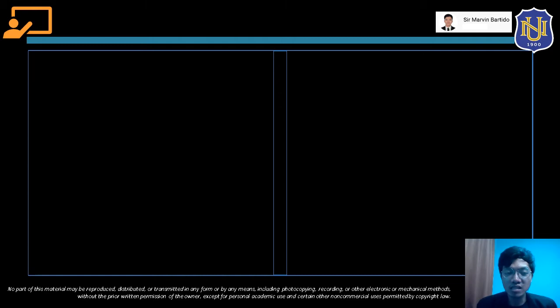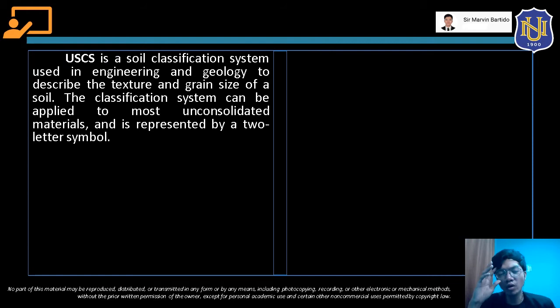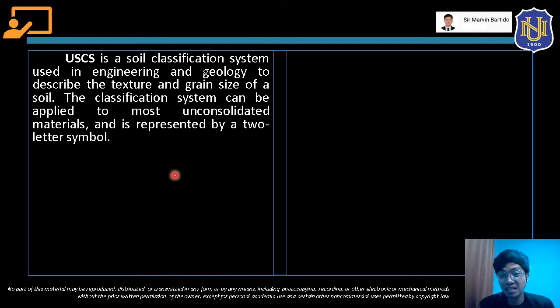The Unified Soil Classification System is presented in Table 5.2. The USCS is widely used by engineers to classify soil for construction purposes other than highway engineering and road construction. It is a soil classification system used in engineering and geology to describe the texture and grain size of a soil. It can be applied to most unconsolidated materials — gravel, silt, sand, clay — and soil is represented by a two-letter symbol.